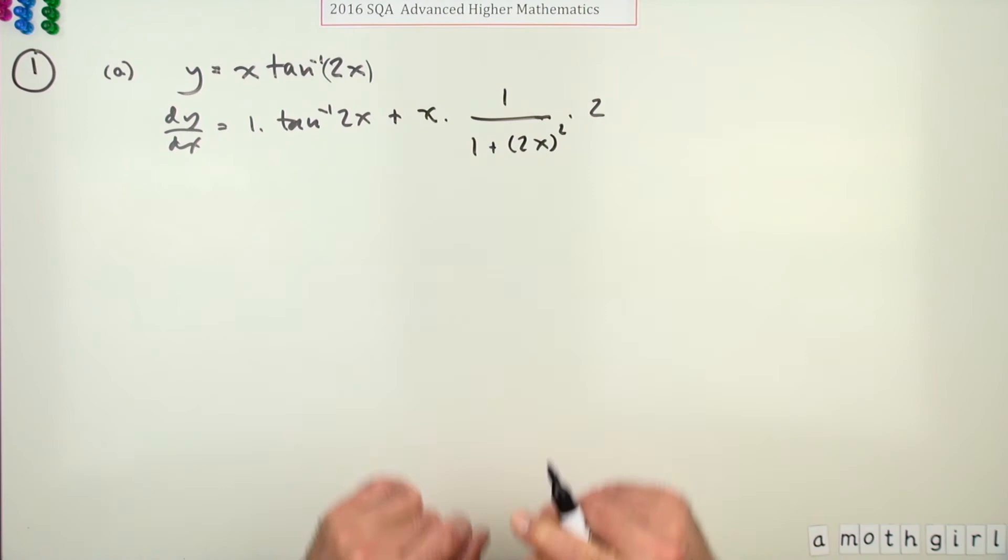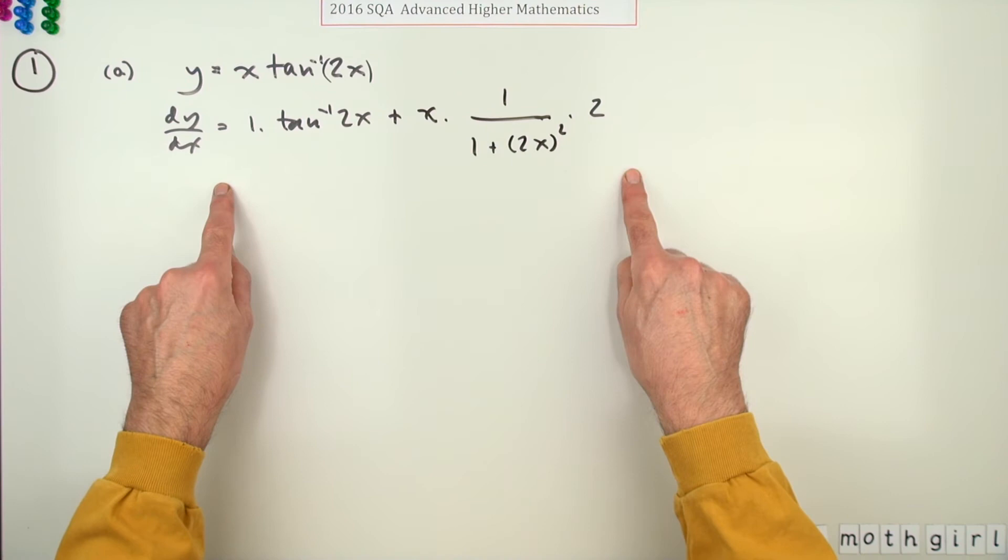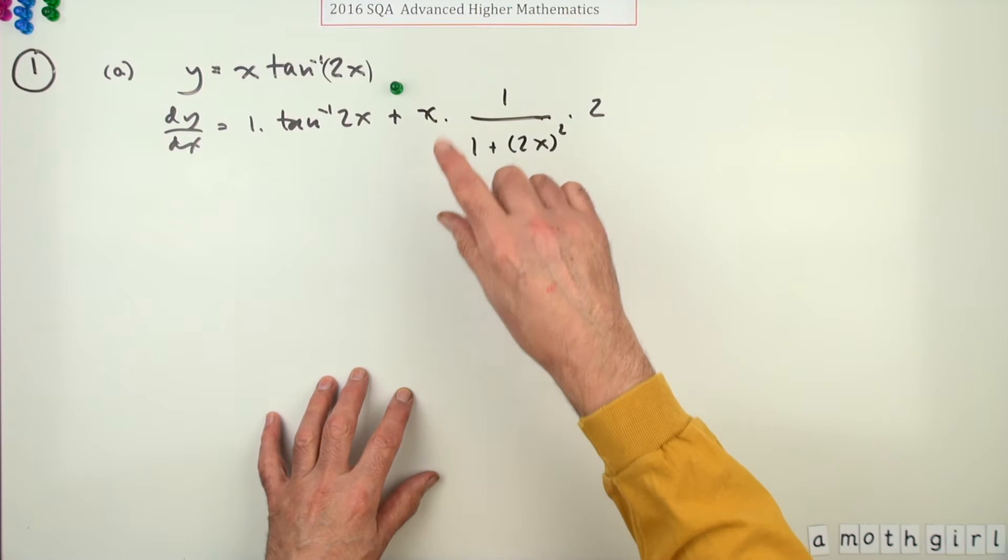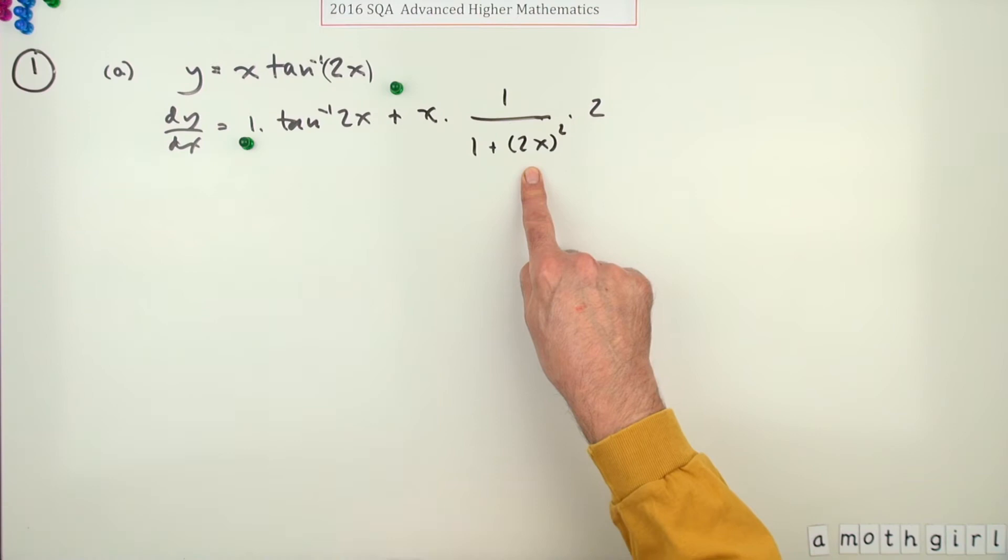Now there were three marks for part A and that's virtually done. The way the marks were allocated: one mark for knowing to use the product rule but not actually doing any of the differentiations yet. Next mark was for differentiating one of the terms, so let's give it to this one here.